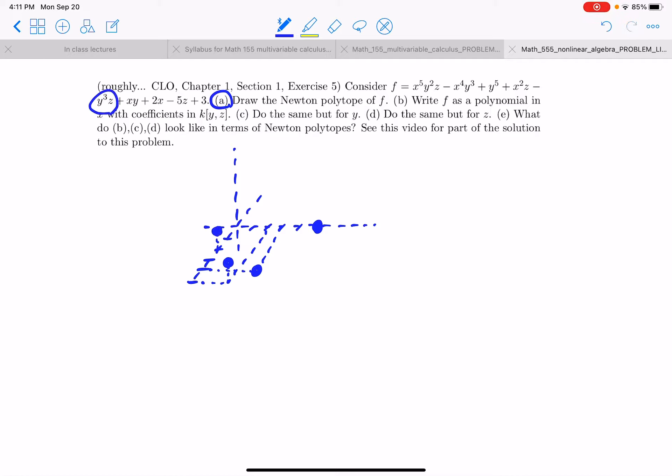And now we have 0,3,1. Okay. And now we have 1,1,0. And then we have 1,0,0. And then 0,0,1. And 0,0,0.